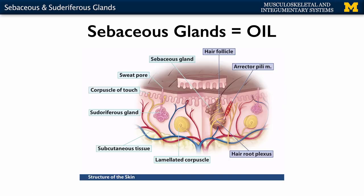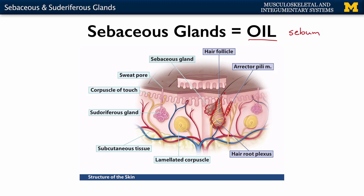There are two main categories of glands associated with the integumentary system. We're going to start with sebaceous glands — a lot of times referred to as oil glands — because that's what they're releasing. They secrete what's referred to as sebum, which is basically an oily secretion. As you can see in this picture, the sebaceous gland is associated with the hair follicle. It releases its secretion to lubricate the hair along the shaft, which is on the external surface of the skin.